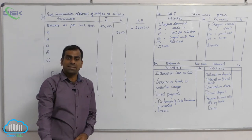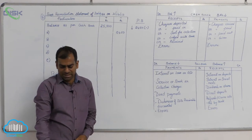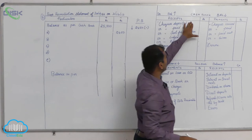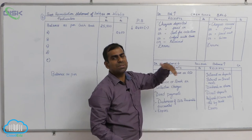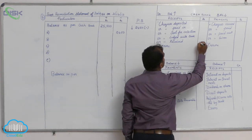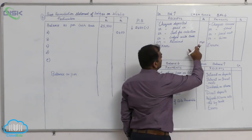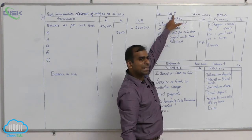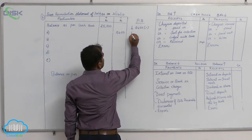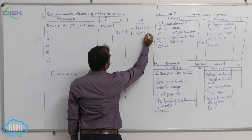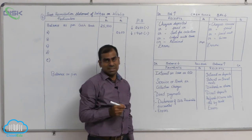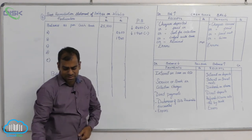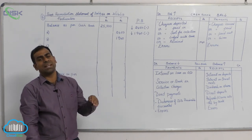Transaction B states that the receipt column of the cashbook has been over-added by 1940. This means in the cashbook receipt column, an extra amount of 1940 was taken. As a result, the cashbook balance will increase, which means the passbook balance will decrease. Since you are finding out the passbook balance, it will decrease by 1940, so enter 1940 in the minus column.